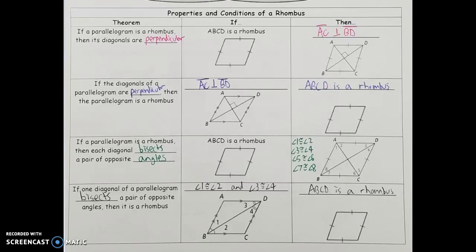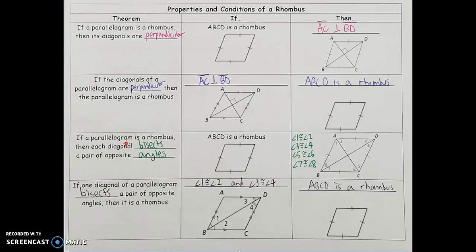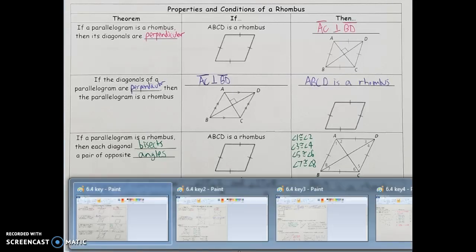A second property of rhombuses is that if I have a rhombus, each diagonal bisects a pair of opposite angles. So if I draw the diagonals, they bisect those opposite angles in the corners — angles 1 and 2 are congruent, 3 and 4 are congruent, 5 and 6 are congruent, and 7 and 8 are congruent. Each angle in the corner is split into two congruent pieces. And I can use the converse: if a diagonal bisects a pair of opposite angles, that tells me I have a rhombus.